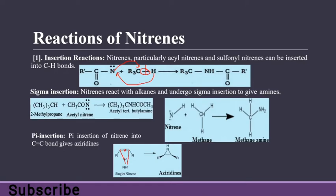In pi insertion, the double bond breaks: one carbon makes a single bond with nitrogen and the other carbon also makes a single bond with nitrogen, giving the final product. So sigma insertion involves C–H single bond insertion, while pi insertion involves breaking a double bond and inserting into it.